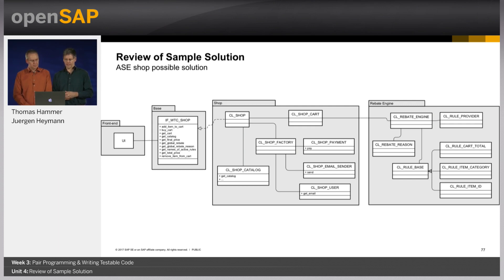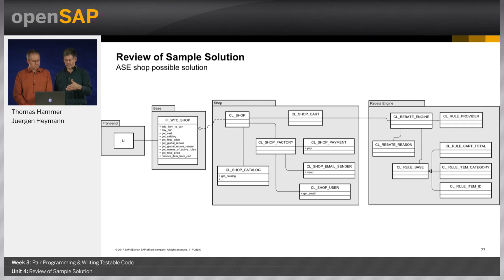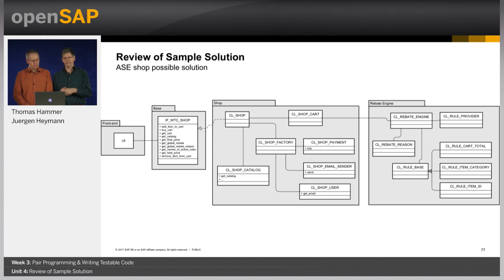Starting from the left, there is a UI. We didn't look at that at all, but you may have looked at the interface — how to interface a component. You see the items that are in the shop class or shop interface that the UI uses to talk to the shop, and you see the actions on there: add an item, buy the cart, and so forth.